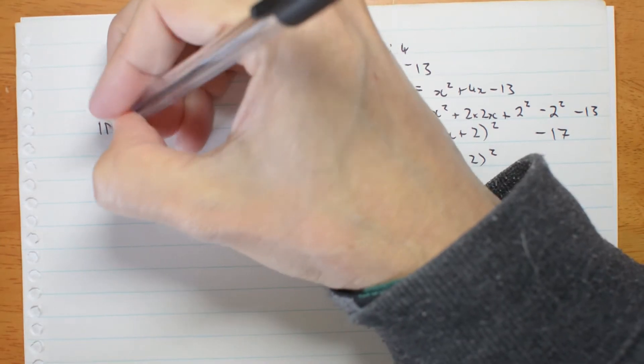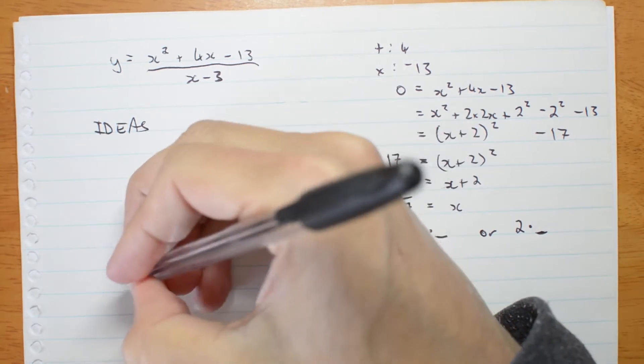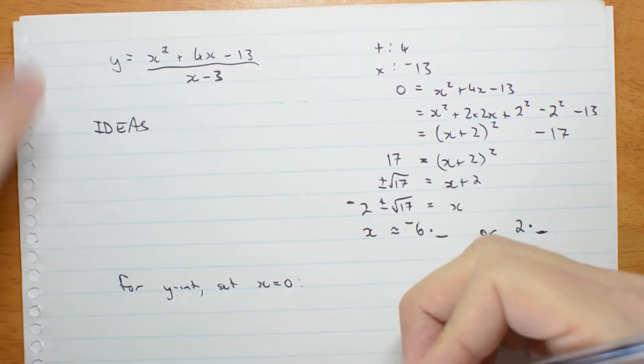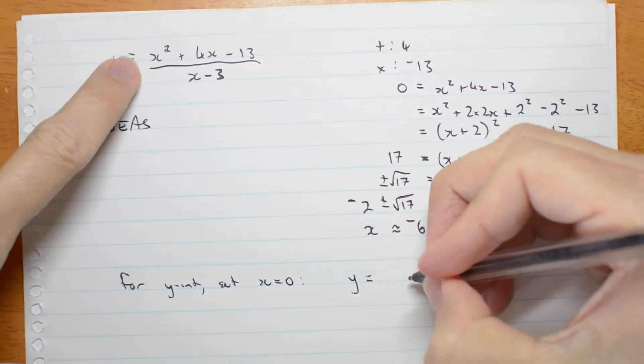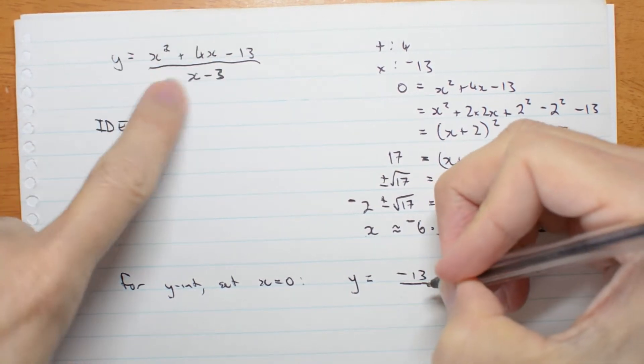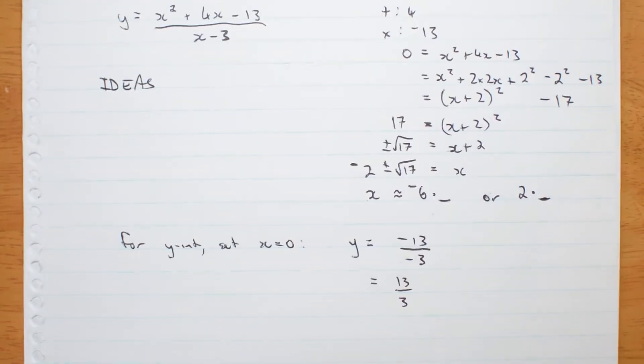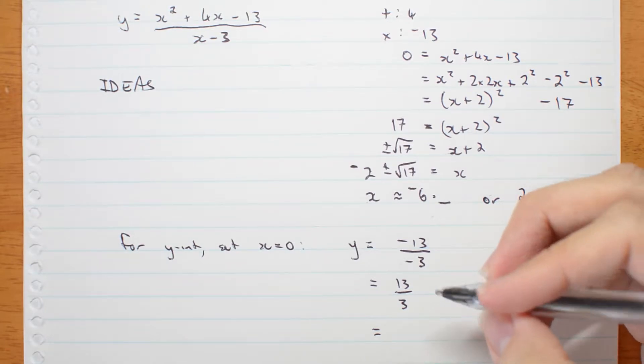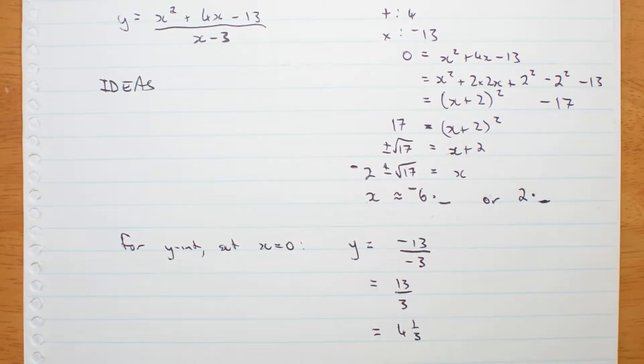So let's try ideas. Intercepts. For the y-intercept, set x equal to 0. I'm going to get y is 0 plus 0 minus 13 over 0 minus 3. Well that's 13 on 3 and I probably want that in mixed number form. 13 divided by 3 is 4 so that's 4 and a third. That'll help me to sketch it.